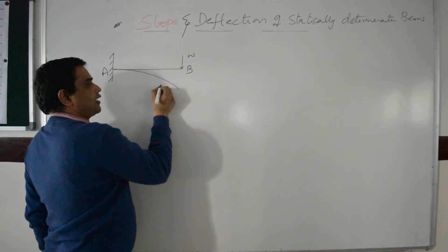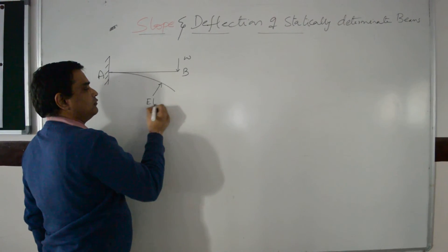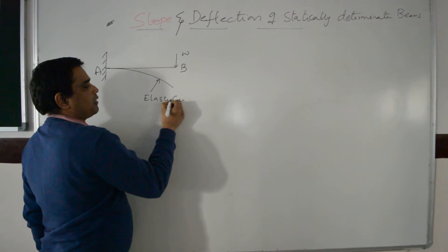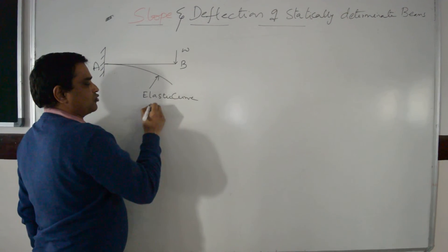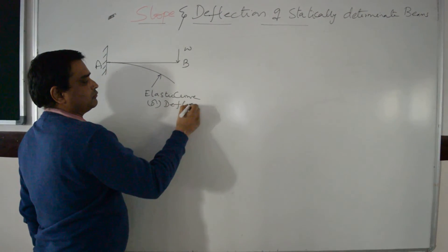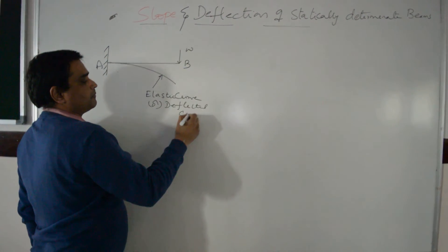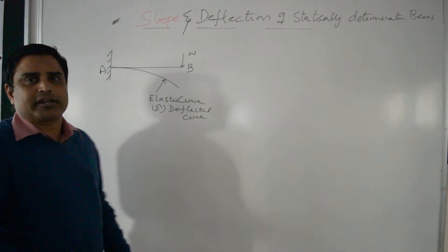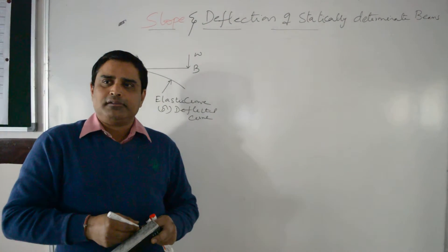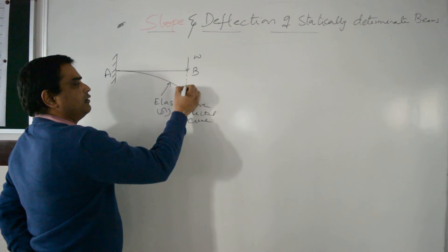This circular arc shape is called the elastic curve, otherwise called the deflected shape of the beam. A slope is the angle between the tangent drawn on the axis of the beam and the elastic curve.